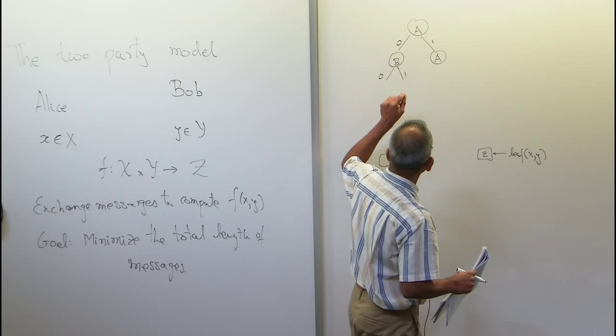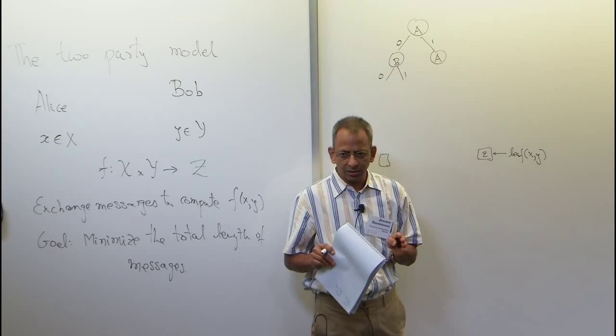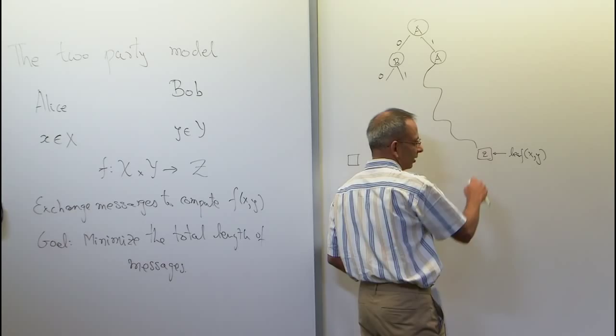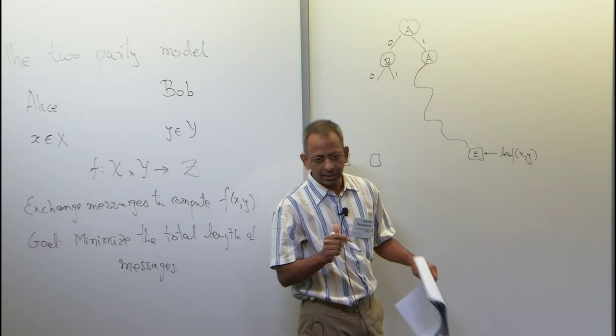Once you fix the input x and y, the leaf that you reach is completely determined. I call that leaf(x, y). There is a path that the computation took, and that path will be called the transcript on x and y.